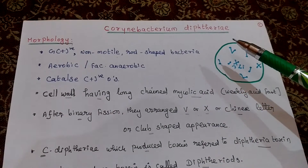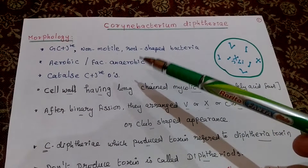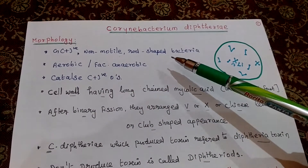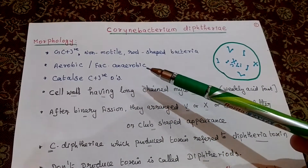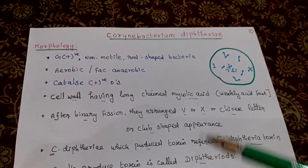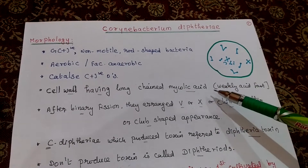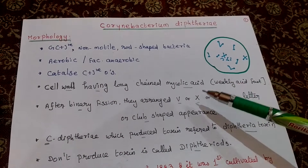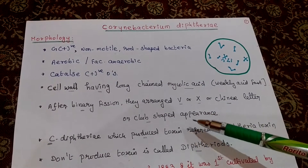Corynebacterium diphtheriae morphology: this organism is a gram-positive, non-motile, rod-shaped bacterium. It is aerobic or facultative anaerobic, and also catalase positive. The cell wall contains mycolic acid. After binary fission, this organism arranges in V-shape, L-shape, Chinese letter, or club-fin shape.